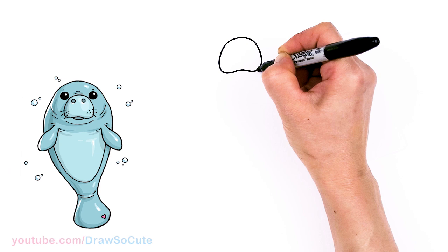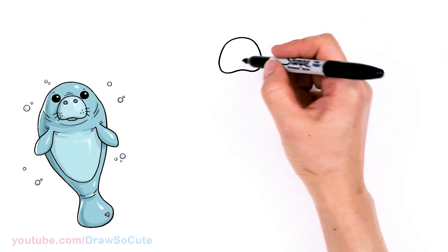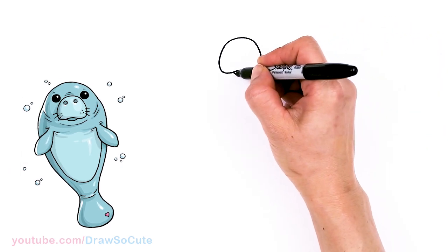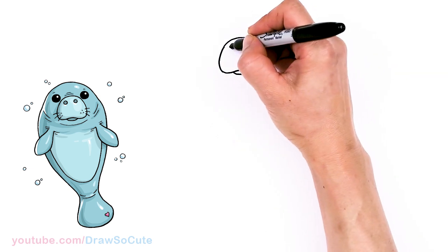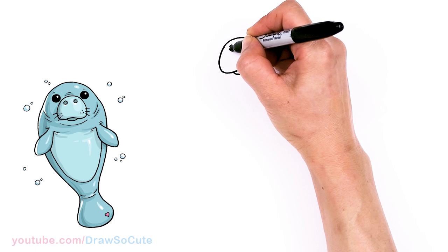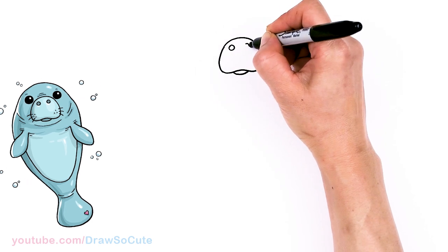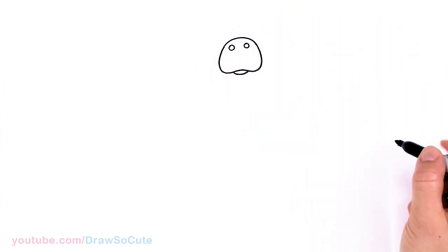Just go up a little bit and come right back down. And then at the bottom right here, connect with a curve. Let's come back up here and we're going to draw two circles for the nostrils.